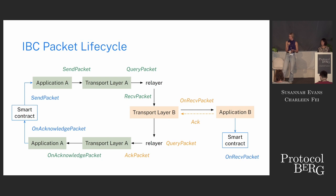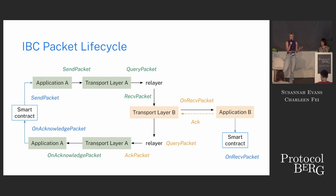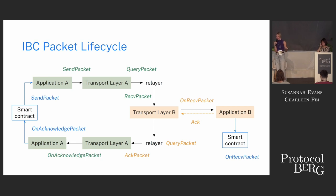Let's go through the packet lifecycle in more detail. Because a relayer isn't concerned with the specific application, this lifecycle applies to any application using IBC — token transfer, sending a message, whatever you want. When you send a packet, it gets committed to the chain. A relayer can query for this packet commitment and pass it on to the counterparty chain. On receiving the packet on the counterparty, it gets passed on to the application on that chain, which performs whatever specific logic it needs.